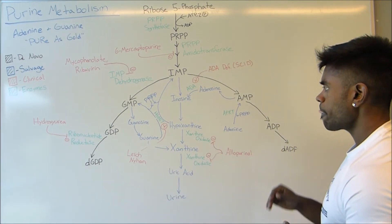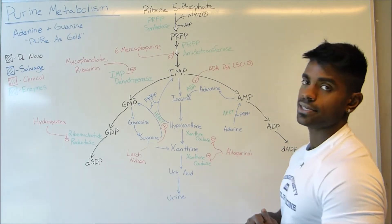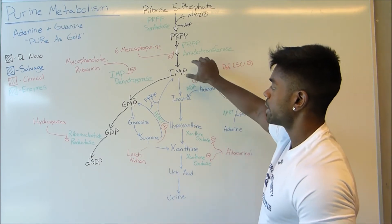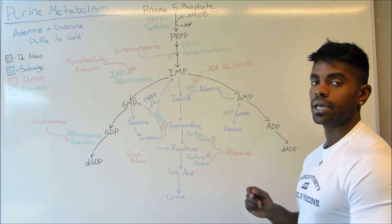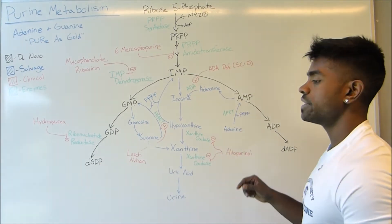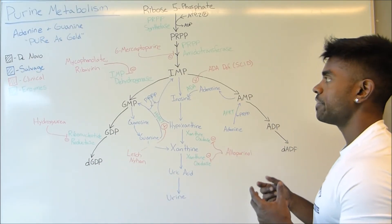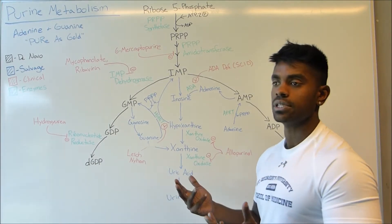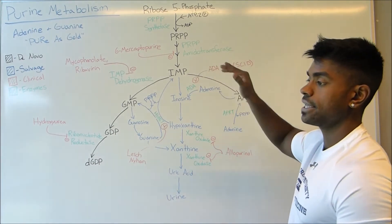Now let's talk about the different drugs and diseases associated with each of these enzymes. The first thing we'll talk about is 6-mercaptopurine. 6-mercaptopurine is going to inhibit this entire pathway because it actually mimics dGDP and dADP, so these molecules come in and incorporate themselves into the DNA — and since they're just shams, they're not going to be able to actually produce the end product, so this whole pathway gets inhibited.